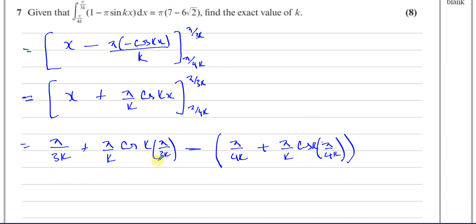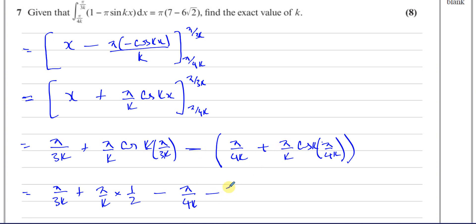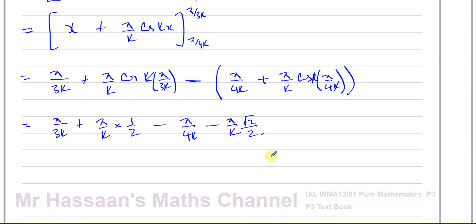Now simplifying: the k cancels in the cosine argument, so cosine of pi over 3 is cosine 60 degrees, which equals one half. So that term becomes pi over k times one half. For the lower limit term, the minus signs combine to give minus pi over 4k, and cosine of pi over 4 is cosine 45 degrees, which in exact form is root 2 over 2, giving minus pi over k times root 2 over 2.